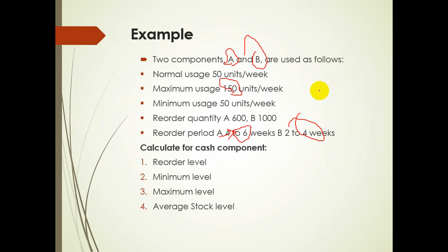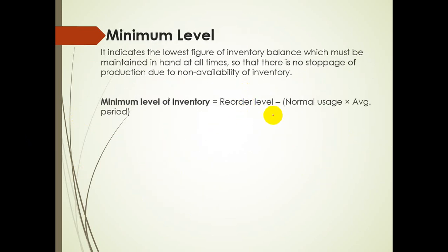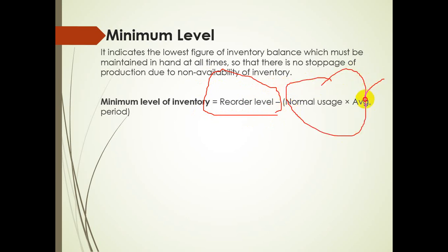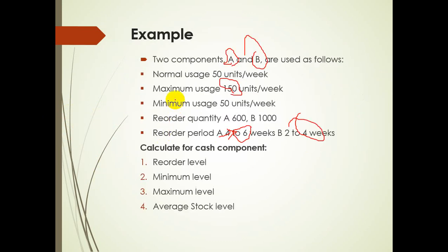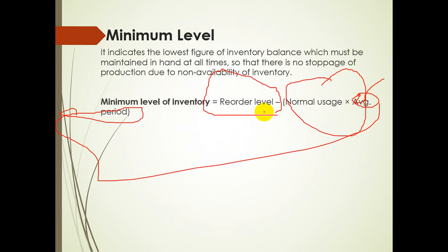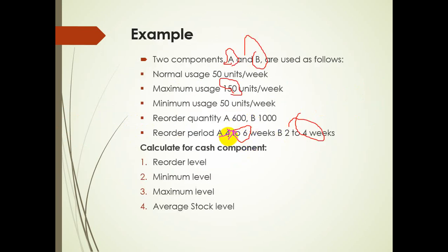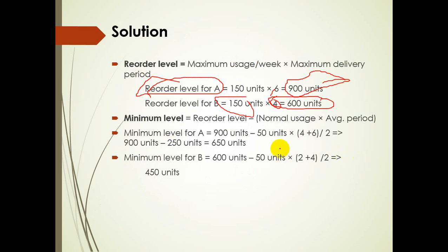Next is the minimum level. The formula is: Minimum Level = Reorder Level − (Normal Usage × Average Reorder Period). ROL for A is 900, for B is 600. Normal usage is 50 for both. For A, the average period = (4 + 6) / 2 = 5. So: 900 − (50 × 5) = 900 − 250 = 650.